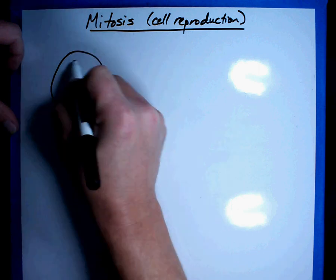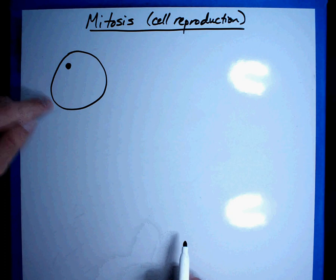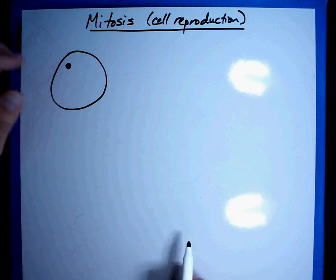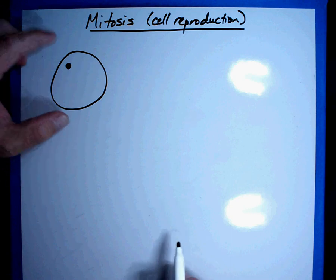Here's a normal cell. Now, all I'm going to do is draw the cell membrane and the nucleus. All the parts are inside, the mitochondria, the Golgi apparatus, the endoplasmic reticulum, all those things are there. I'm just not going to draw them at this point.